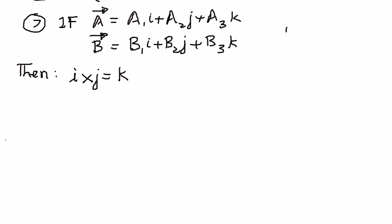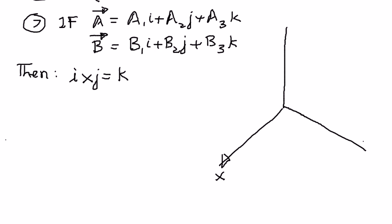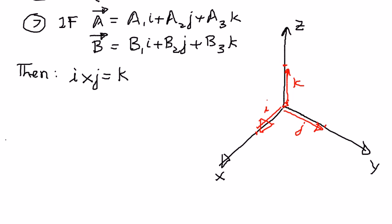Let me draw a graph here to explain further. Let's say this is the x-axis, this is the y-axis, and this is the z-axis. If we take one unit on x, y, and z, we can represent these as unit vectors i, j, and k, starting from the origin. Therefore, i cross j equals k, j cross k equals i, and k cross i equals j.